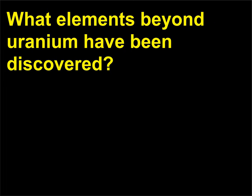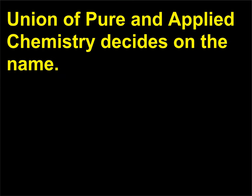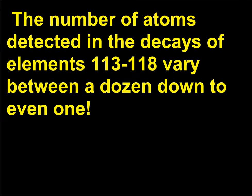What elements beyond uranium have been discovered? Elements 113 to 118 have temporary names until the International Union of Pure and Applied Chemistry decides on the name. The number of atoms detected in the decays of elements 113 to 118 vary between a dozen down to even one.